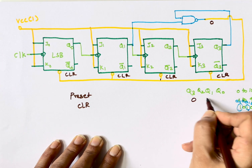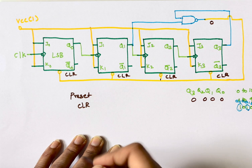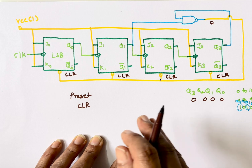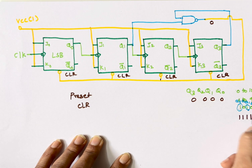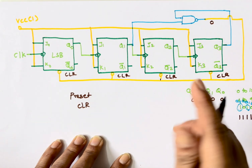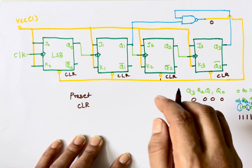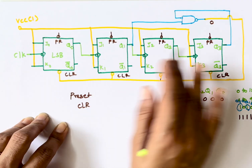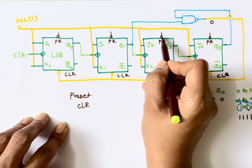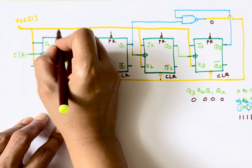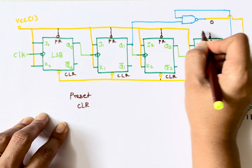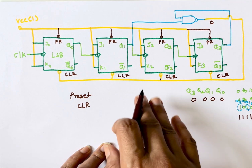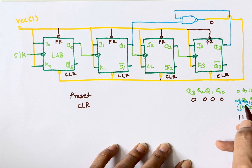When the clear pins receive 0, they don't check the present output or the clock — they simply make the output 0. In the case of preset, when it receives 0 (active low), it sets the output to 1. We connect preset to VCC to disable it, since we don't want to set any value. Connecting preset to VCC (logic high) means it will not activate. The NAND gate output connects to the clear input of all flip-flops.